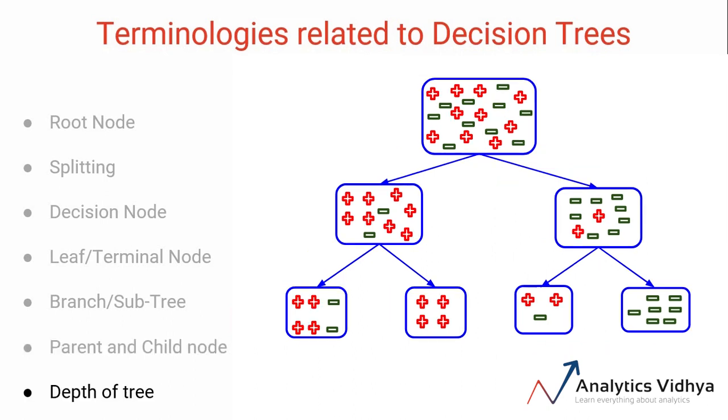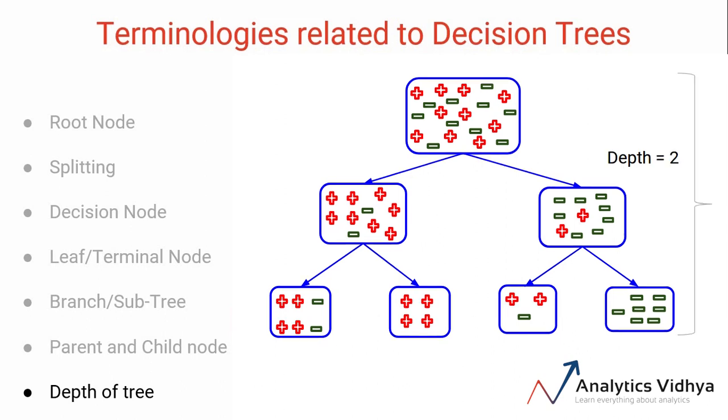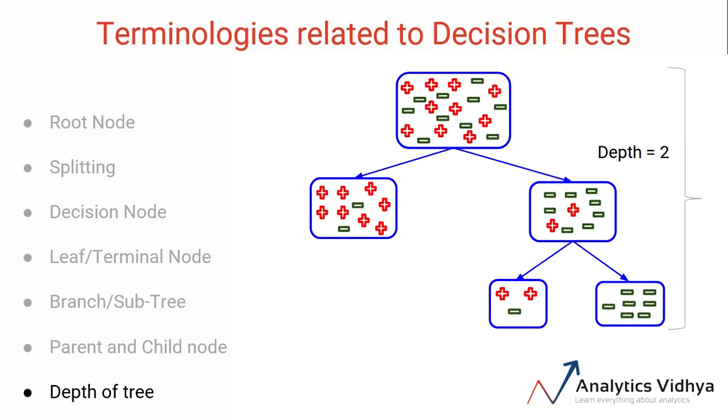Finally, there's one more terminology called the depth of a tree. It is the length of the longest path from the root node till the leaf node. When we look at this particular example, the longest path here is 2, and hence the depth of this tree will be 2.